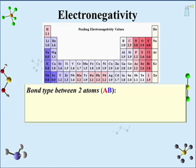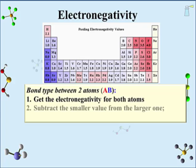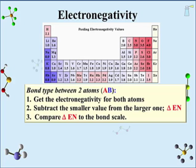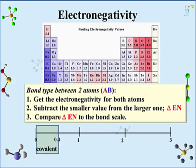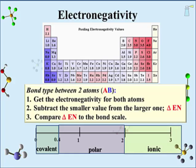It is a rather straightforward process. Once again, we employ atoms A and B. First, get the electronegativity for both atoms in the bond. Then subtract the smaller value from the larger one — this produces a positive number referred to as the difference in electronegativity. Take that difference to a bond scale. If the difference is 0.4 or less, the bond is covalent. If the difference is between 0.5 and 1.9, the bond is polar covalent. If the difference is 2.0 or greater, the bond is ionic.